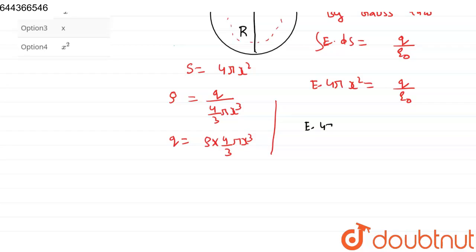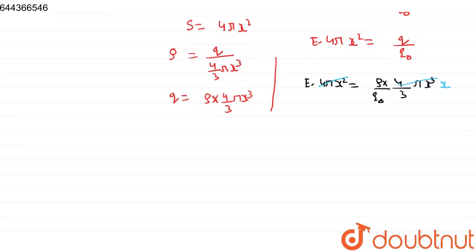So E times 4π x squared equals rho times 4/3 π x cubed over epsilon naught. 4π x squared cancels and we are left with only x. So E equals rho x over 3 epsilon naught.